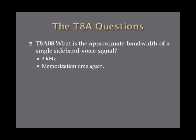What is the approximate bandwidth of a single sideband voice signal? A single sideband voice signal has a bandwidth of about 3 kilohertz. If you're centered in on a single sideband signal, you can hear that signal about a kilohertz and a half above and below the center. 3 kilohertz is the bandwidth of a single sideband voice signal — just memorize it.